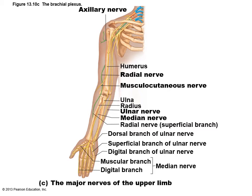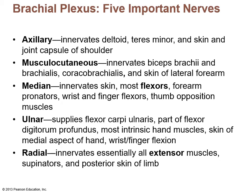The brachial plexus is important for innervating the arm. Five key nerves: the axillary nerve innervates the deltoid and teres minor; the musculocutaneous nerve innervates the biceps brachii and brachialis; the median nerve innervates flexor muscles of the arm; the ulnar nerve innervates the flexor carpi ulnaris and part of the flexor digitorum profundus; and the radial nerve innervates all the extensor muscles. You don't need to memorize every detail, but recognize them for multiple-choice questions.